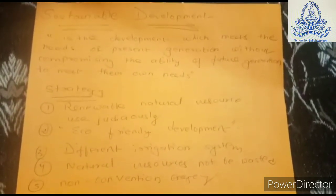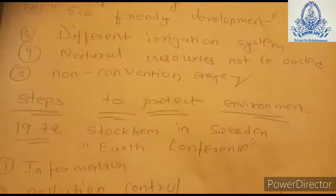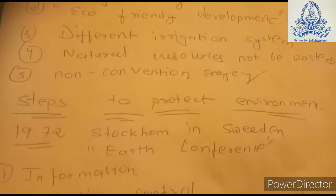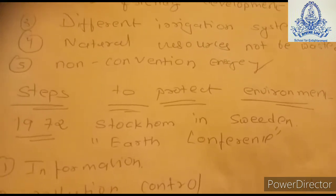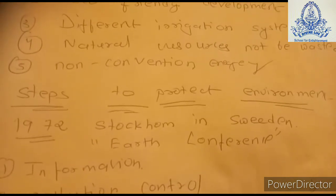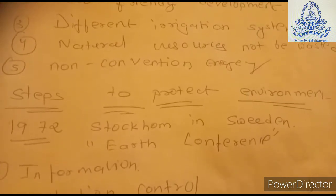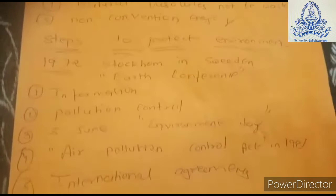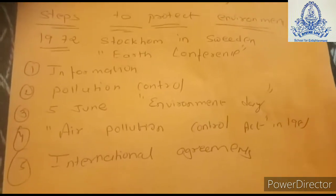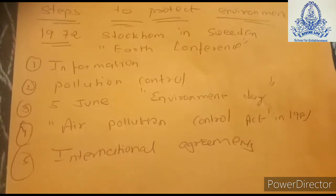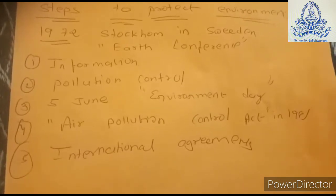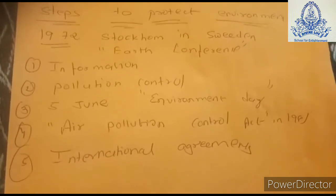The last topic in this chapter is steps we can take to protect our environment. The first conference was organized in 1972 at Stockholm in Sweden — this was the first time all organizations came together for the protection of the environment at the global level. In terms of government steps, information about the pollution condition of different cities of the nation is presented so that we know which area or city has more pollution.